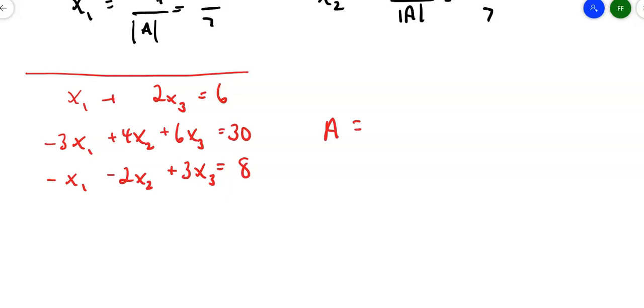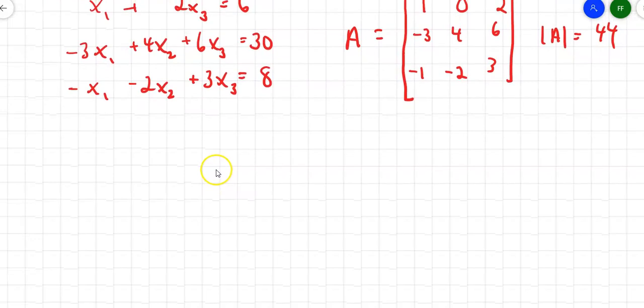So the first thing I'll do is I'll assemble my coefficient matrix. Sometimes half the battle is copying the numbers and the signs in the right spot. I've got 1, and then I need a 0 in here, right, because there is no x sub 2 coefficient. Well, I mean, there is one. It's 0. And then a 2. The next row goes negative 3, 4, 6. And then negative 1, negative 2, 3. I sat down and calculated the determinant of matrix A. It turns out the determinant of matrix A is 44. So that means I can continue with Kramer's rule. If the determinant was 0, then you can't use Kramer's rule.